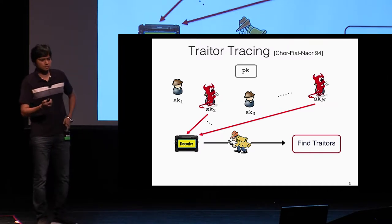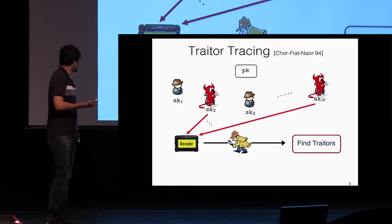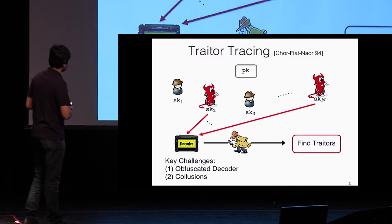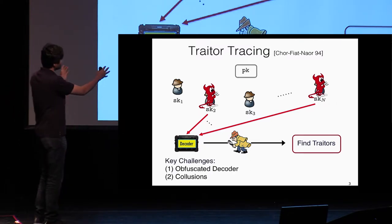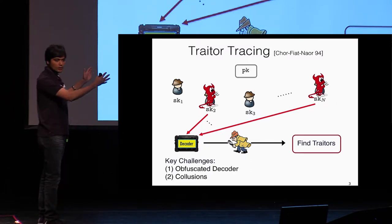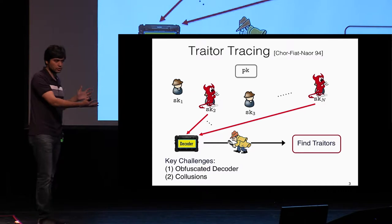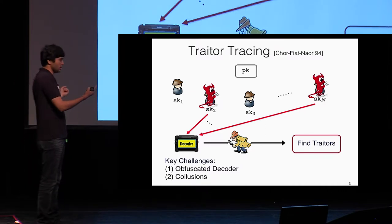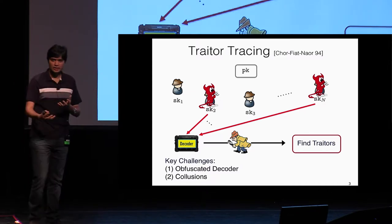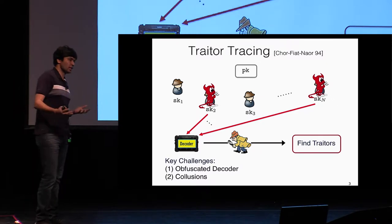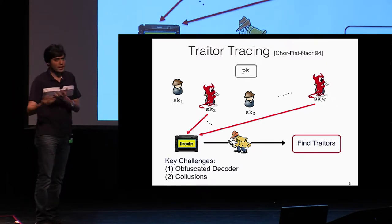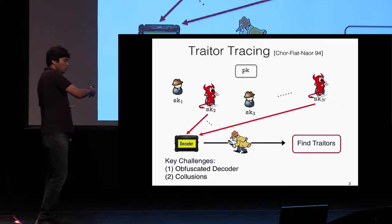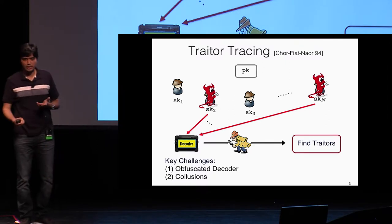Why is this problem hard? The hardness stems from the fact that the adversary could potentially collude — it could corrupt multiple users and use different secret keys to create just one decoding device. Additionally, the adversary could be using obfuscation, hardware, or any other technique, and we can't rely on being able to look inside the decoding device and figure out which keys have been used.